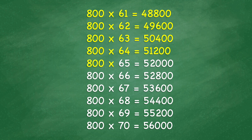800 times 65 equals 52,000. 800 times 66 equals 52,800. 800 times 67 equals 53,600. 800 times 68 equals 54,400.